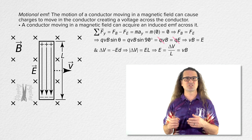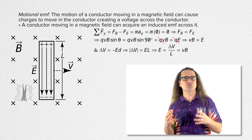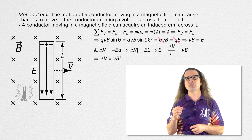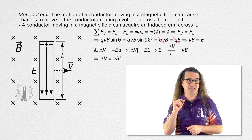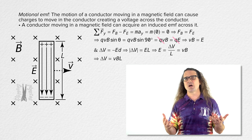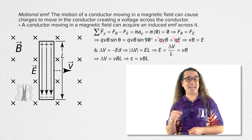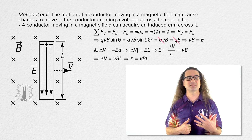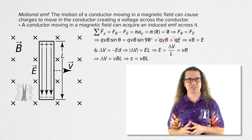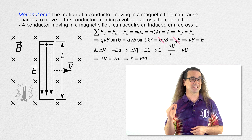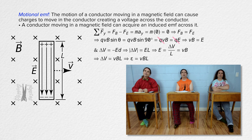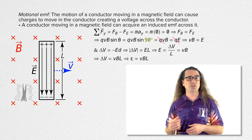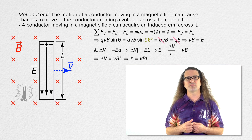Rearranging, the induced voltage across the length of the conductor equals the velocity of the conductor times the magnetic field times the length of the conductor. In other words, the motional EMF built up between the ends of a conductor moving through a constant magnetic field equals v times B times L. This equation assumes the conductor is moving normal to the plane of the uniform magnetic field — that is, the angle between velocity and magnetic field is 90 degrees.